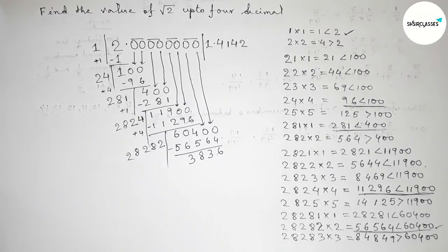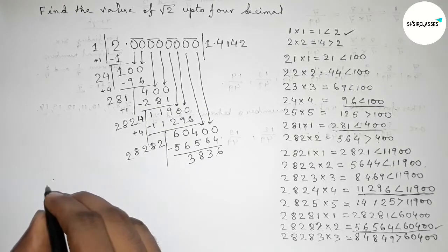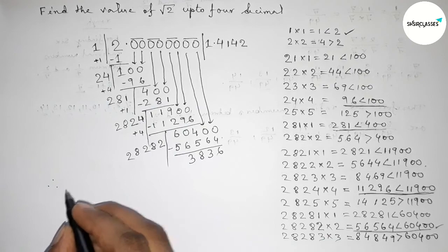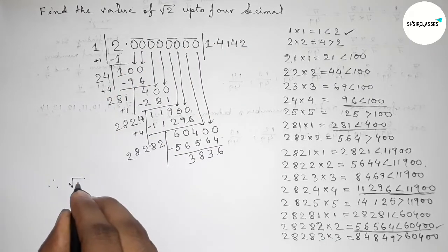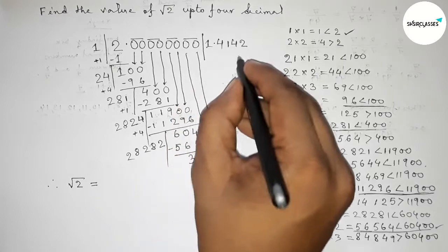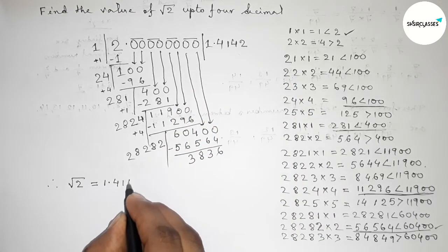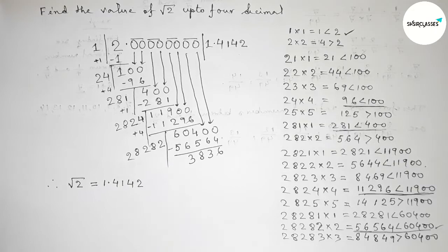Continuing this process, the value of root 2 up to 4 decimal places equals 1.4142. That's all — thanks for watching. If this video is helpful to you, please share it with your friends. Thanks for watching.